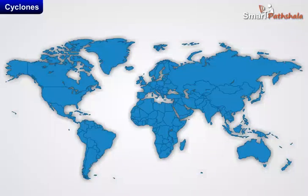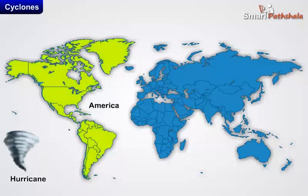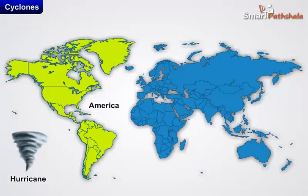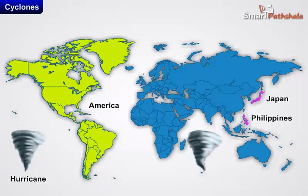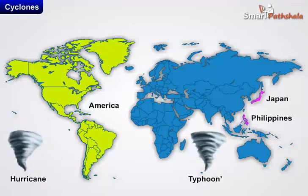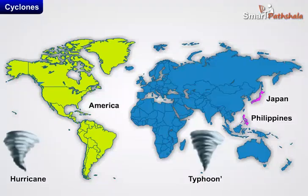A cyclone is known by different names in different parts of the world. It is called a hurricane in the American continent. In the Philippines and Japan, it is called a typhoon.